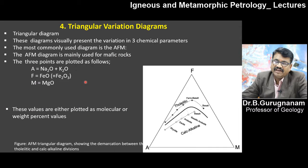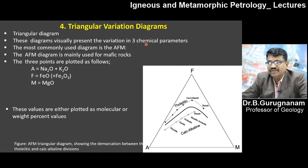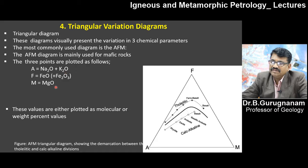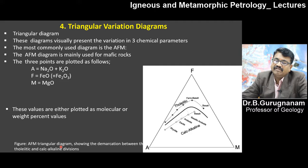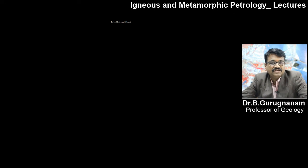The triangular variation diagram uses three parameters: A represents sodium and potassium, F represents the iron component, and M represents MgO — a three-point trilinear system. If your plot falls in a particular area, it indicates rhyolite, dacite, basalt, calc-alkaline, or tholeiite group. The most commonly used triangular diagram is the AFM diagram, used for representing mafic rocks. Values are plotted as molecular or weight percent. The AFM diagram shows the demarcation between tholeiitic and calc-alkaline divisions.